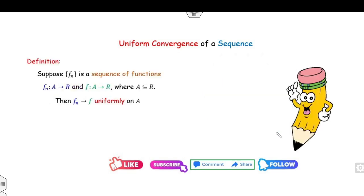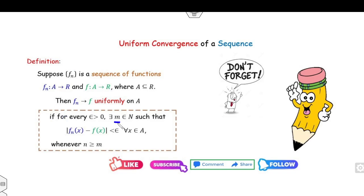Students, please note down this definition. A sequence of functions f_n is said to converge uniformly to the function f, which has the same domain as f_n, if for a given epsilon greater than zero you can find a positive integer m such that |f_n(x) - f(x)| is less than epsilon whenever n is greater than m.